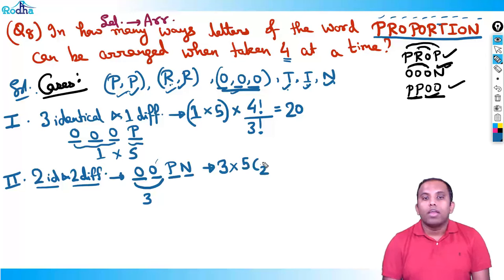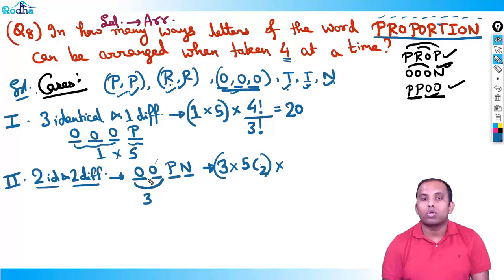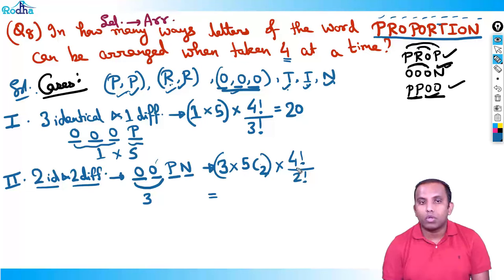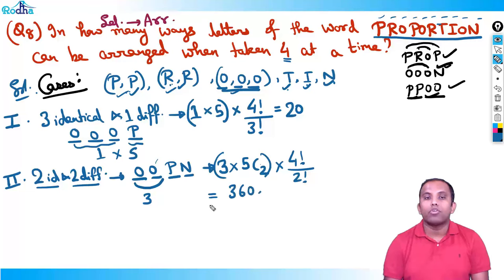So the calculation for case two is: three × five C two × (four factorial ÷ two factorial). Five C two equals ten, four factorial divided by two factorial equals twelve. So three × ten × twelve = 360. The answer for case two is 360.